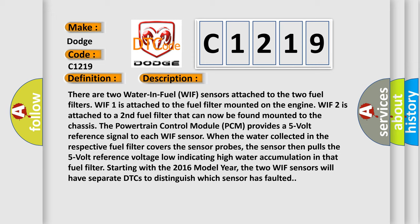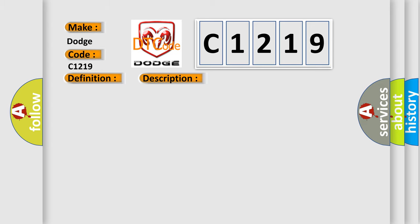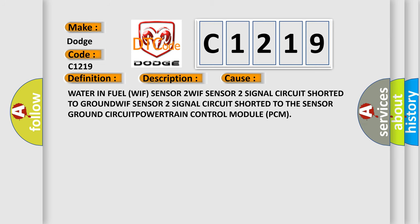When the water collected in the respective fuel filter covers the sensor probes, the sensor then pulls the 5-volt reference voltage low indicating high water accumulation in that fuel filter. Starting with the 2016 model year, the two WIF sensors will have separate DTCs to distinguish which sensor has faulted.